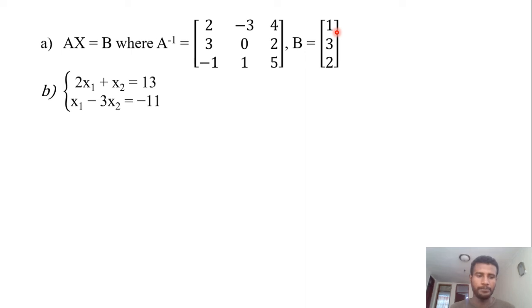Example (b) is also given us a system of linear equations: 2x₁ + x₂ = 13 and x₁ - 3x₂ = -11. So let us do those two examples.